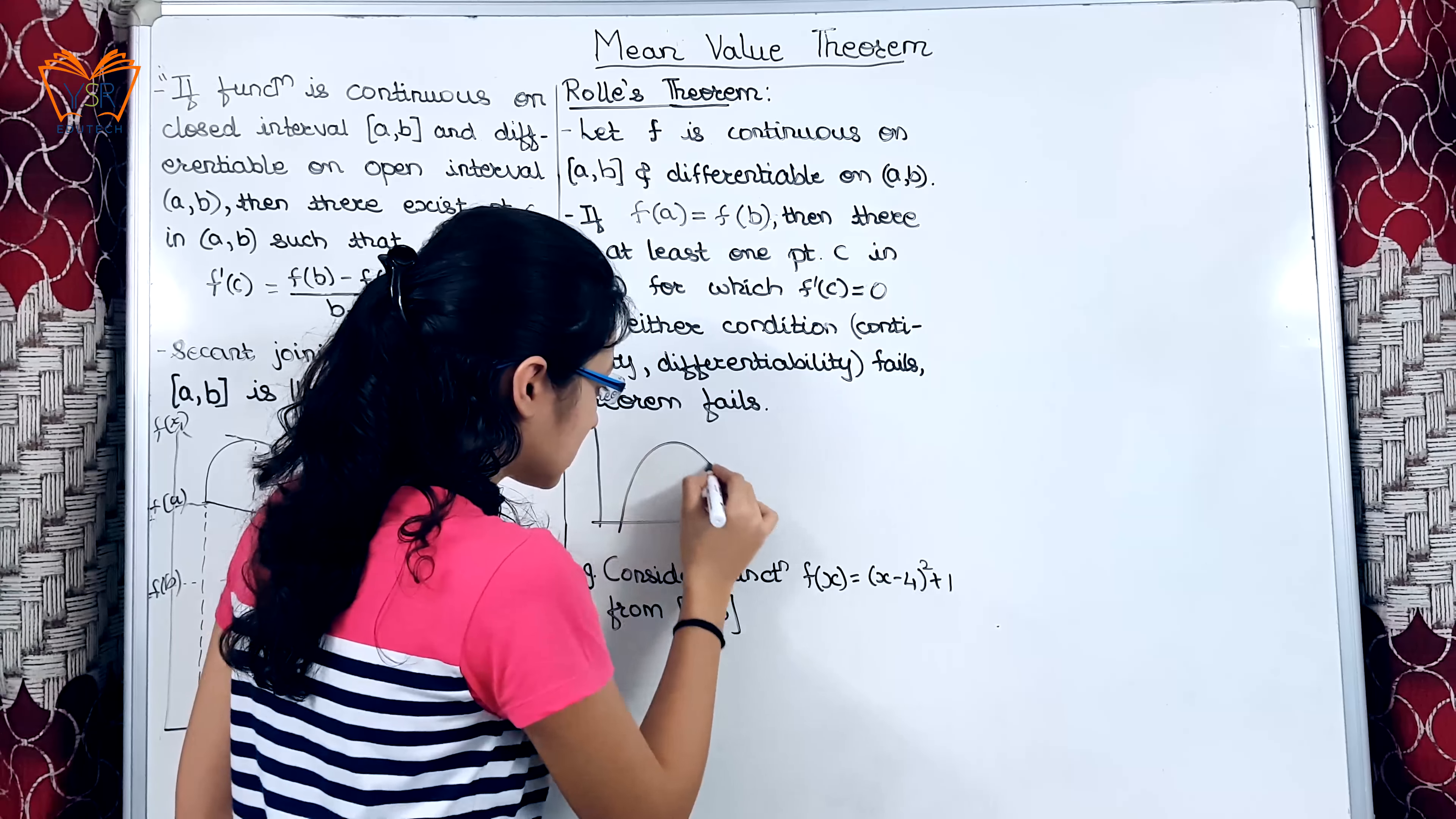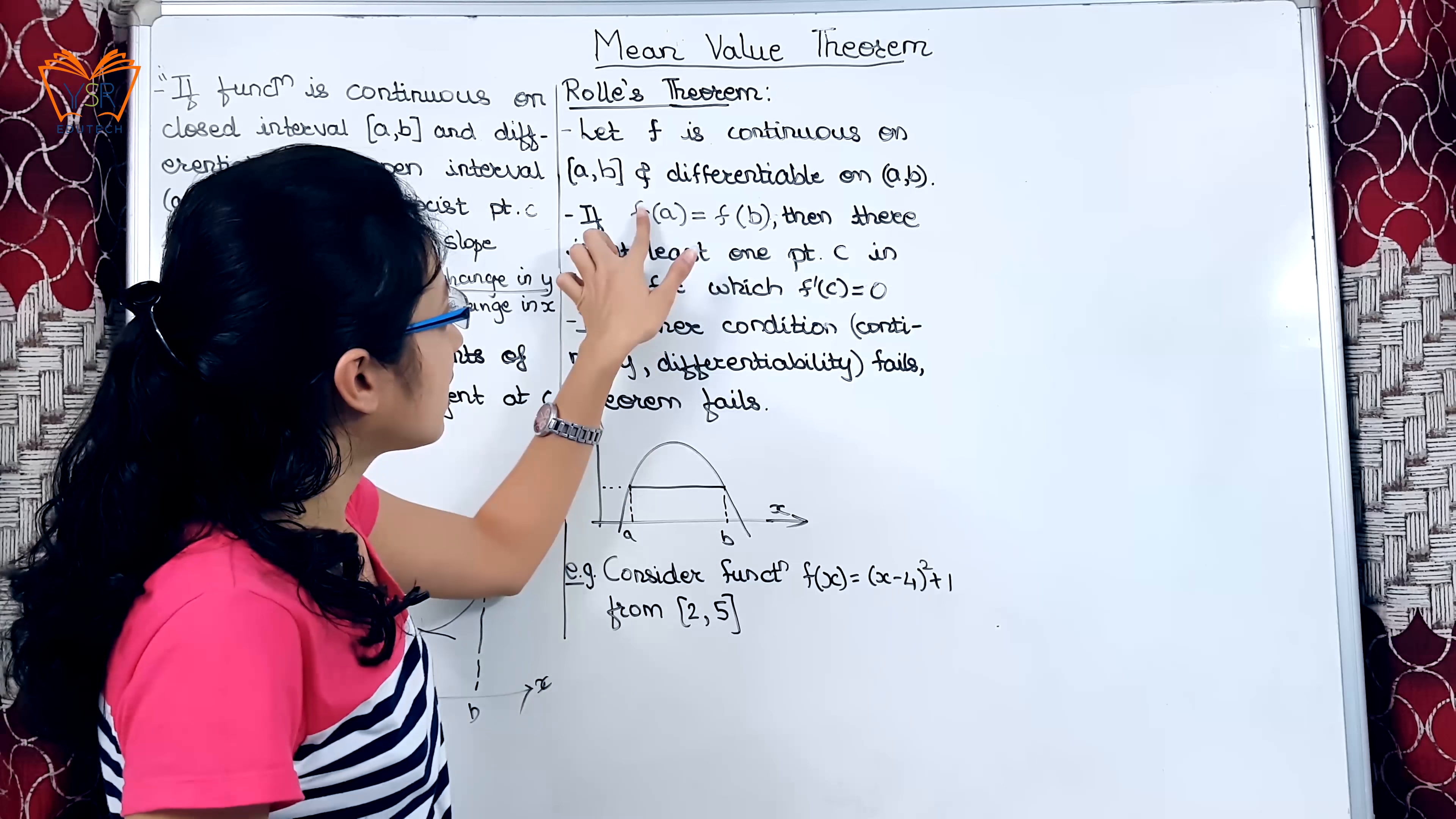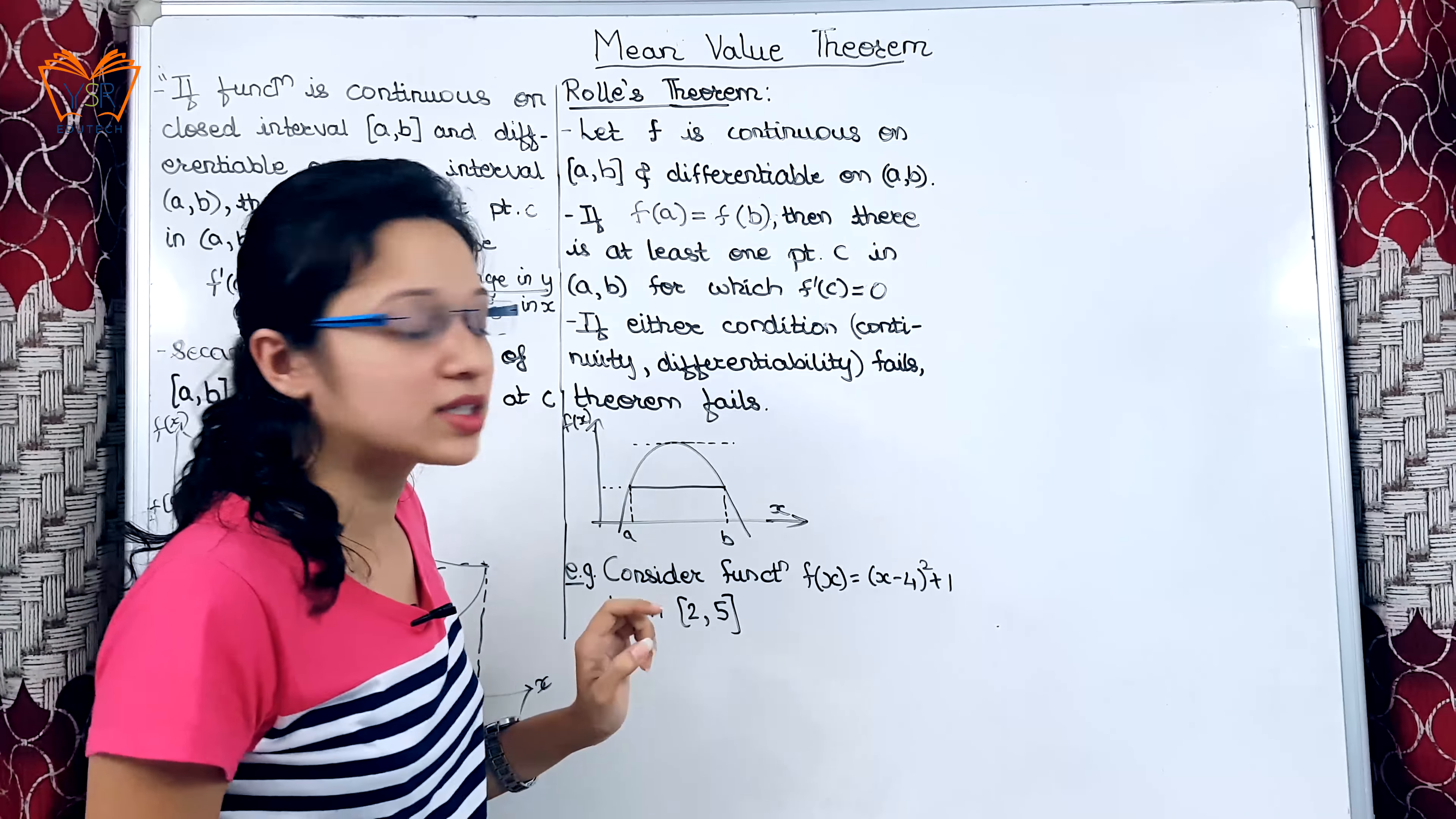This simply says that suppose this point is a and this point is b. This clearly indicates that value of f(a) and f(b) are equal. In this instance, suppose this is c, slope at these two lines will be equal to 0. That is f'(c) equal to 0. This is nothing but Rolle's theorem.